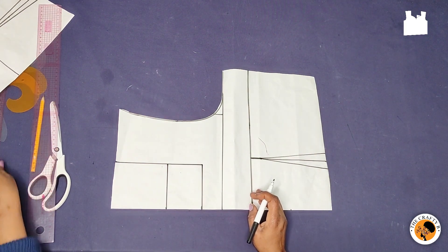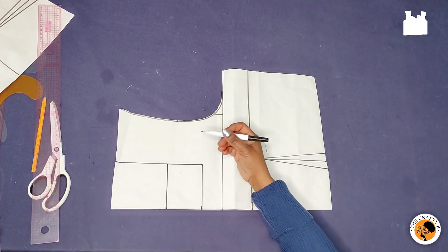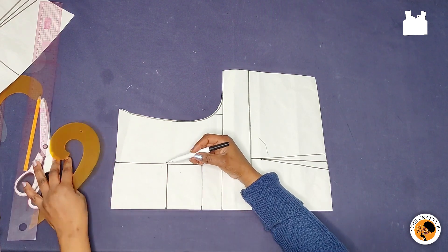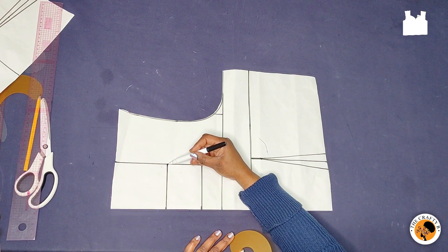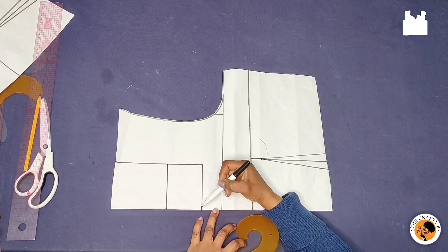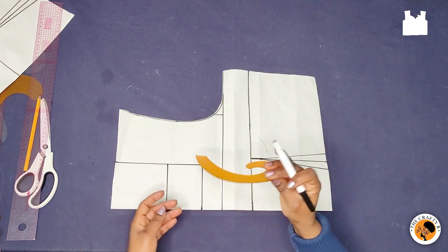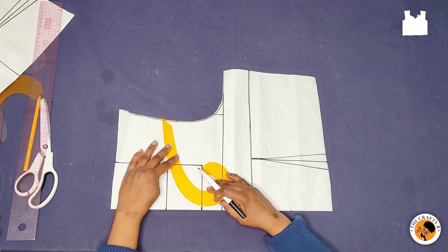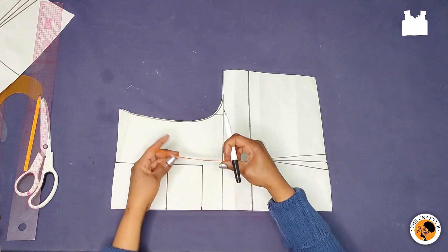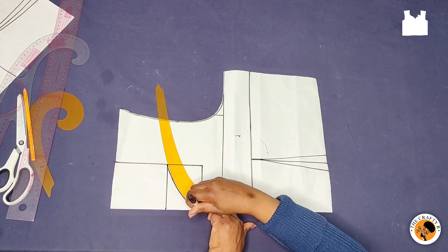You are going to connect from this line here to this center front line here, so I'm going to use my curve ruler to create the sweetheart neckline.